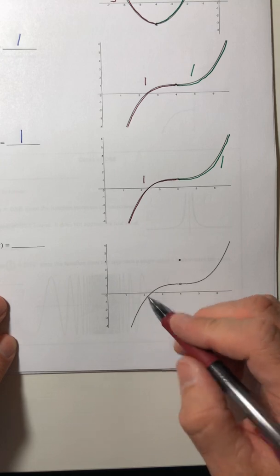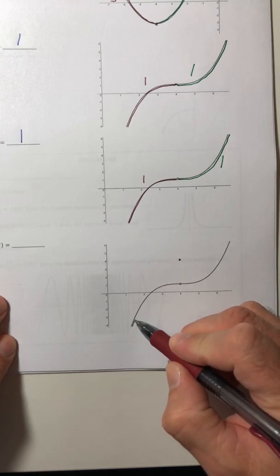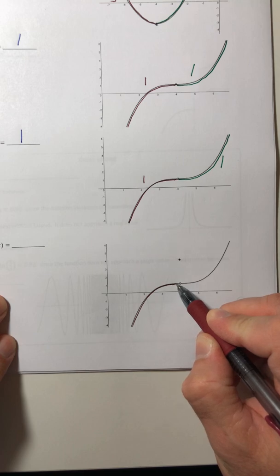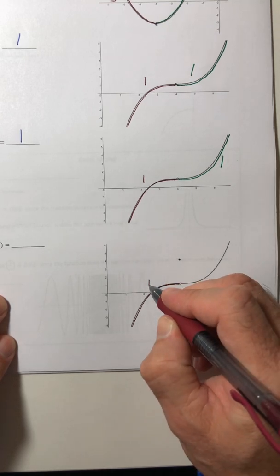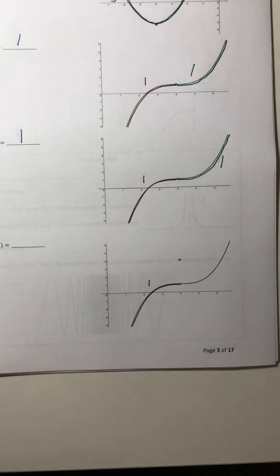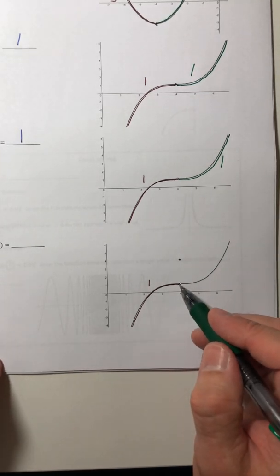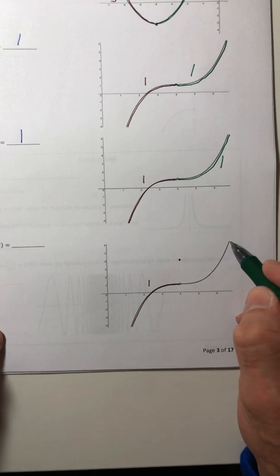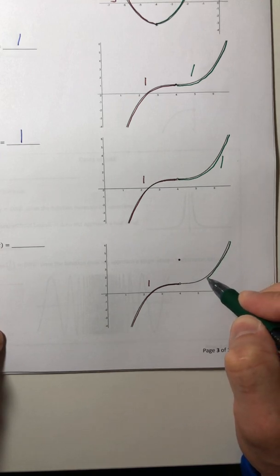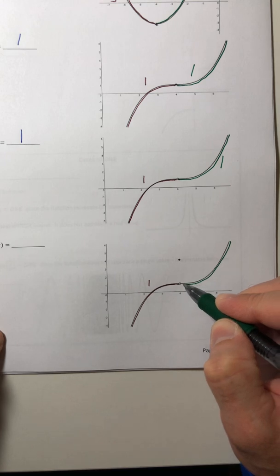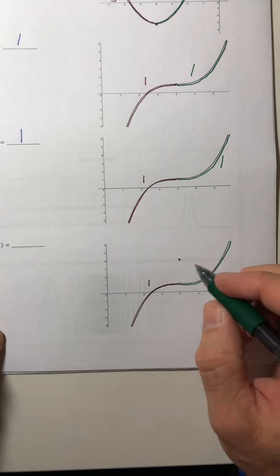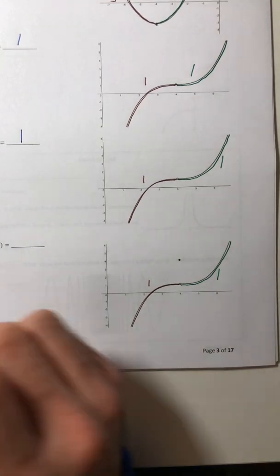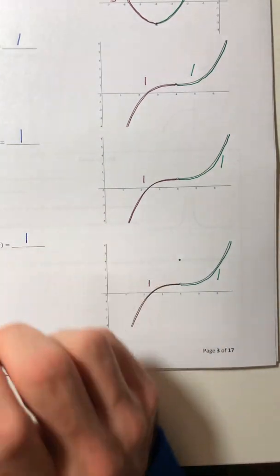So you're approaching X equals four from the left. And it looks like you're still going to run into one because it looks like that's what you're approaching. From the left or from the right side, as you get closer and closer to X equals four, you're still approaching Y equals one from over there. So the limit is equal to one.